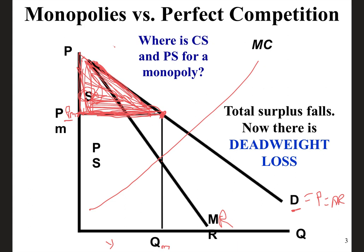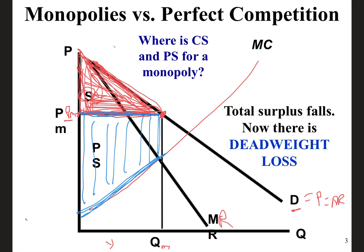The other thing we're interested in is producer surplus. You can bet that the monopoly is going to have producer surplus — this is going to be a more beneficial model for the producer than for the consumer. The monopolist is selling at price PM; everything between that price and the MC curve, up to the quantity the monopolist produces, is producer surplus. Everything shaded in blue is our producer surplus.